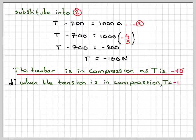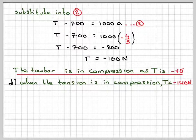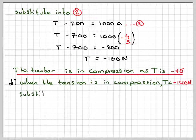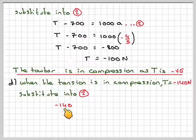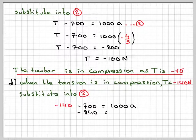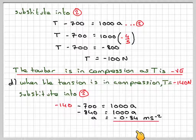When the car brakes are applied gradually, the caravan brakes come on automatically when the tow bar compression force reaches at least 140 newtons. So we set the tension T equal to minus 140 newtons and substitute into the caravan equation: minus 140 minus 700 equals 1,000A, giving minus 840 equals 1,000A, so A equals minus 0.84 metres per second squared. This is the acceleration of the caravan just before the brakes come on automatically.